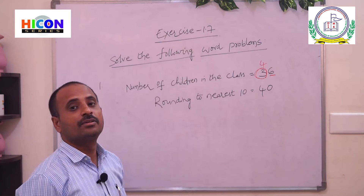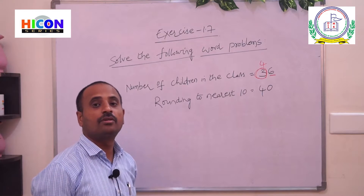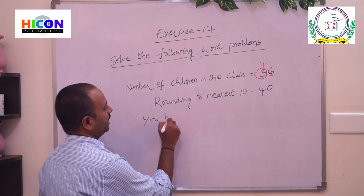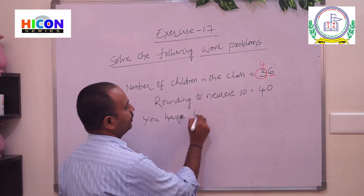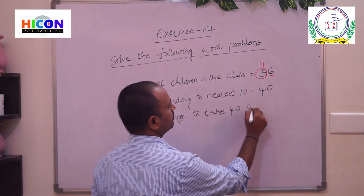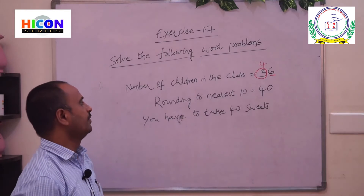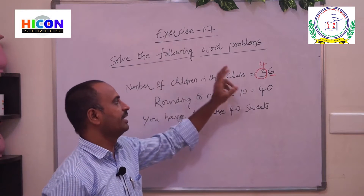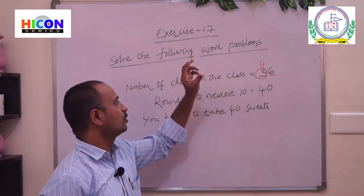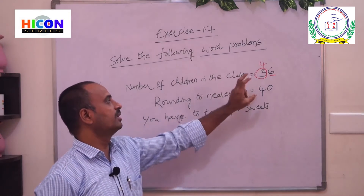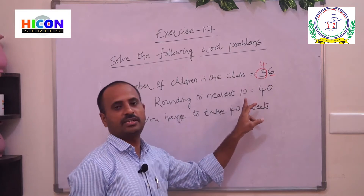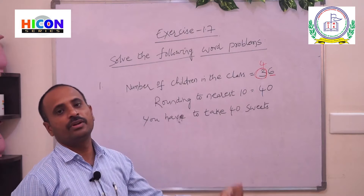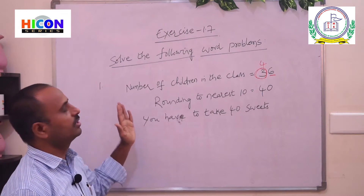So you have to take 40 sweets to distribute for your children. In this way, we can answer any such type of word problem. Here the given number is 36 — the total number of children in the class — and we round it to the nearest ten to get 40. That means you have to take 40 sweets to your class to distribute for your students. This is the way to solve this type of word problem.